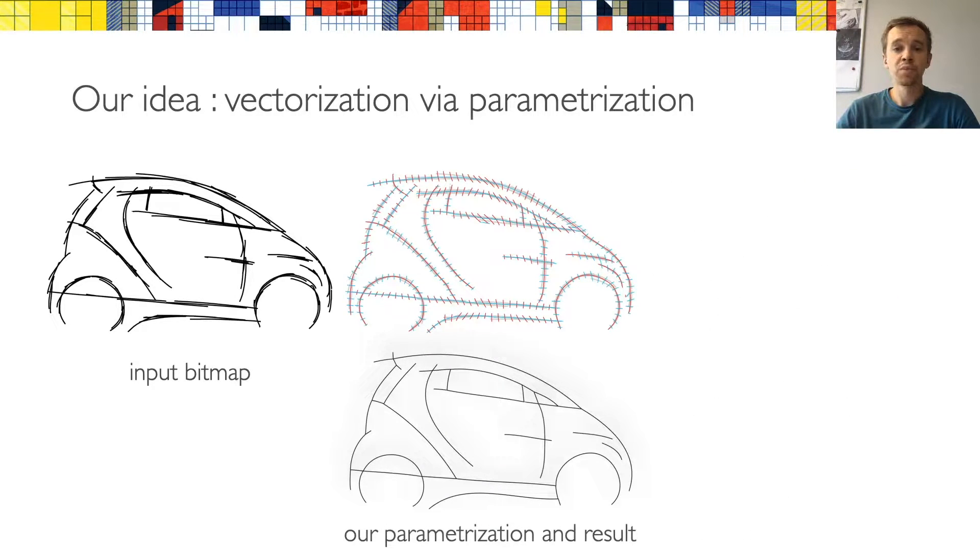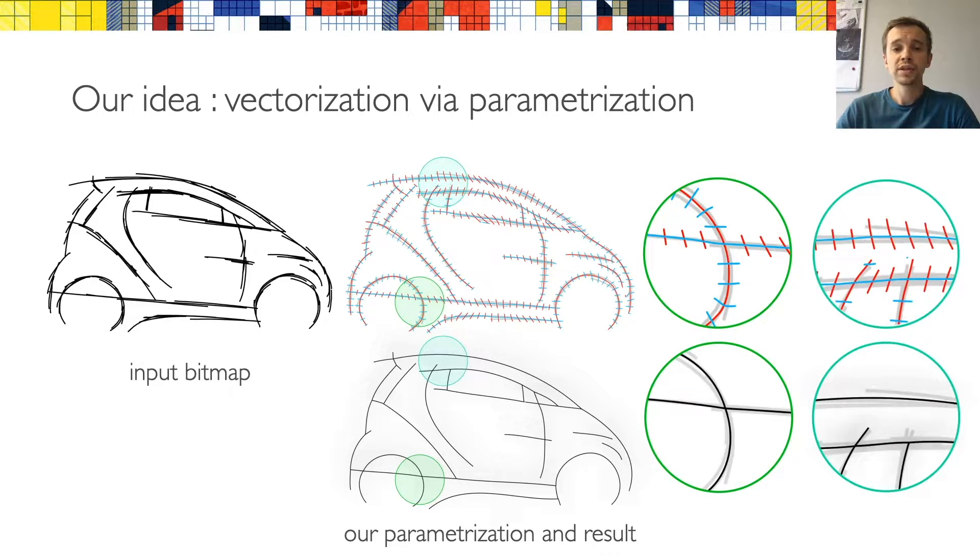This is what motivated us to formulate vectorization as a single global parameterization problem, rather than as a series of local problems. The intuition is that most junctions in a typical drawing can be well explained by locally covering the sketch with a deformed grid. The strength of this approach is that nearby strokes with similar directions get snapped to the same grid iso line, and the junctions get snapped to the vertices of the grid. This allows us to reconstruct a clean topology, even in the presence of over-sketching.